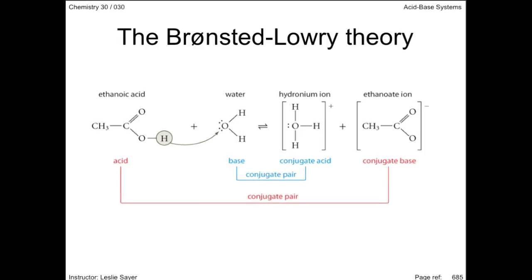Conjugate acid-base pairs in the chemical equations are easy to identify. They differ only by one proton.